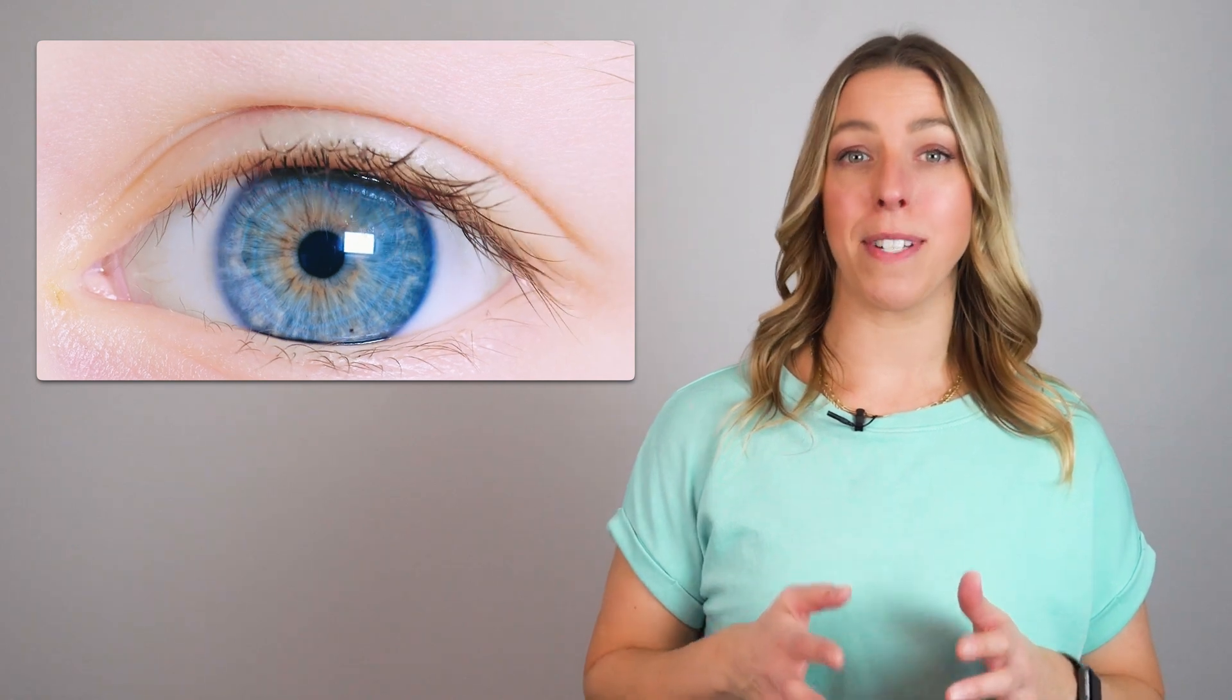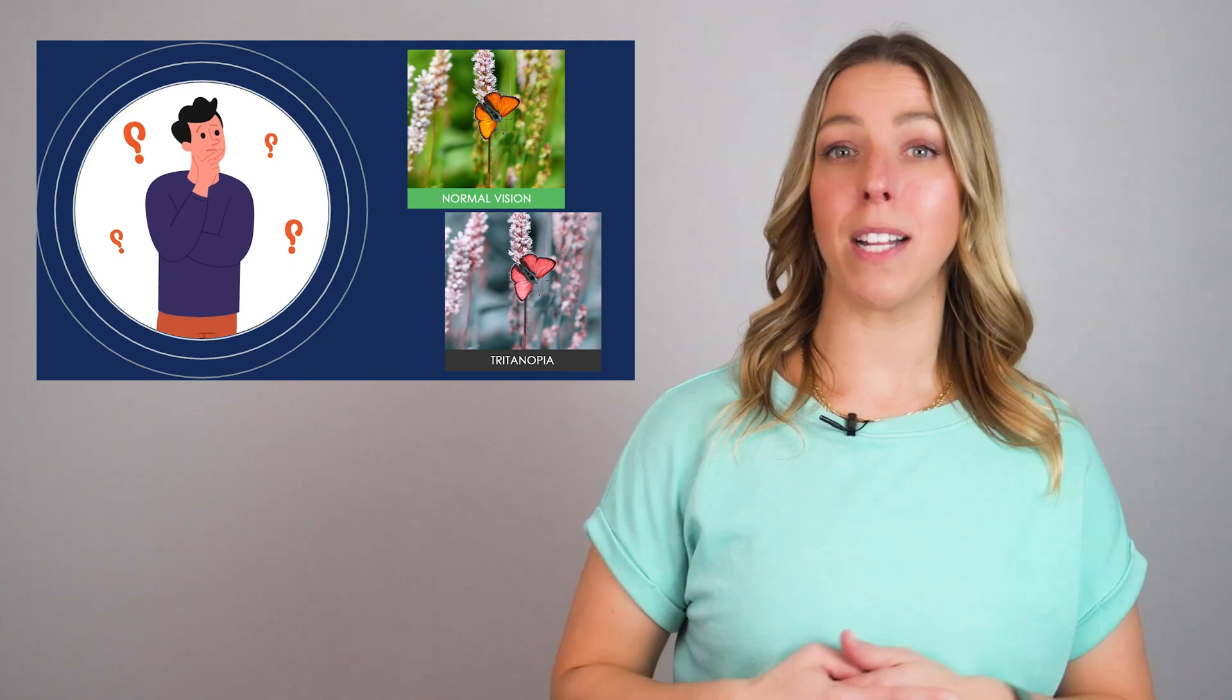Third, tritanomaly. Tritanomaly is a less common type of colorblindness where the blue photoreceptor is affected. People with tritanomaly may have difficulty distinguishing between blue and green colors,